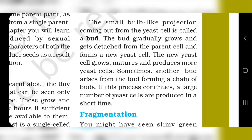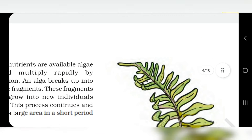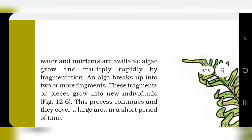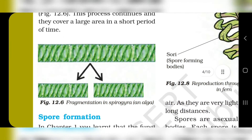Now, fragmentation. We have seen algae, which is found in stagnant water bodies. Water and nutrients are available, so algae grow and multiply rapidly by fragmentation. This algae breaks into two or more fragments, and each fragment grows into a new individual, as you can see in figure 12.6.